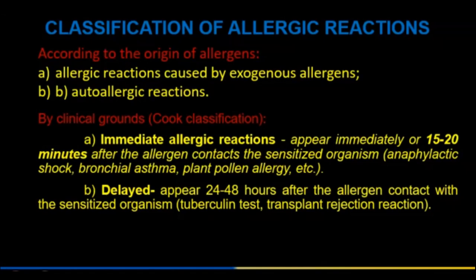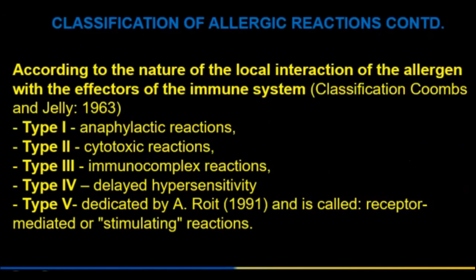Delayed type reactions occur 24–48 hours after allergen contact with the sensitized organism, for example the tuberculin test and transplant rejection reaction. Classification according to the nature of local interaction of allergen with effectors of the immune system uses the Coombs and Gell classification.